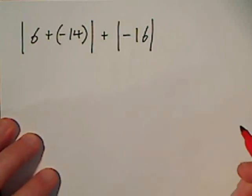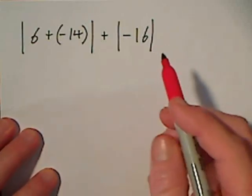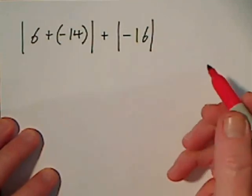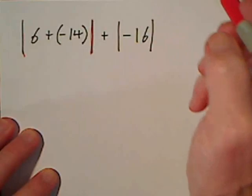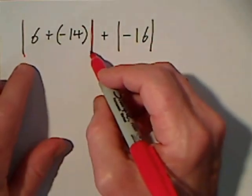In solving problems according to the order of operations, you work within grouping symbols first. These absolute value bars, the vertical bars, are for absolute value. They are grouping symbols.